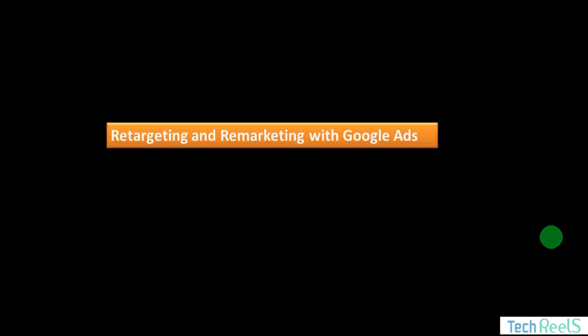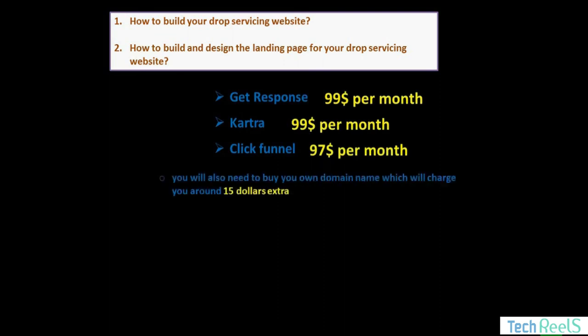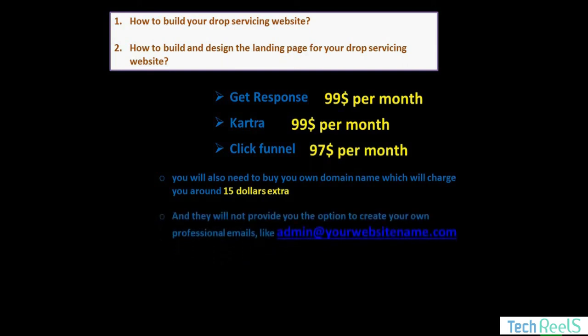Those were the three mastermind and highly effective strategies for getting clients for your drop servicing business. Now, how to build your drop servicing website and landing page? There are many landing page builders but they are very expensive — for example, GetResponse, Kartra, and ClickFunnels. ClickFunnels charges around $97 per month, Kartra and GetResponse around $99 per month, and you also need to buy a domain name for around $15 extra. They also don't provide the option to create your own professional email. I will not recommend these builders.